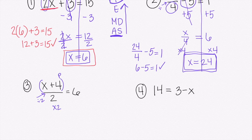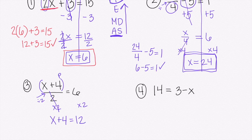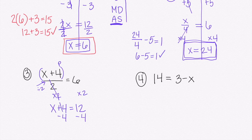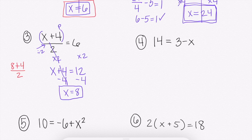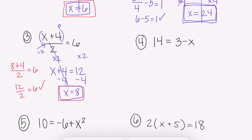To get rid of divide by 2, we multiply by 2 to both sides, so we get x plus 4 equals 6 times 2, which is 12. Now it's just a one-step: to get rid of plus 4, we subtract 4. Those cancel so we get x equals 8. Checking: 8 plus 4 over 2 — we do the top parentheses first: 8 plus 4 is 12, divided by 2 gives us 6. So x equals 8 is correct.